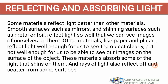When we talk of reflecting and absorbing light, by now you know what we are talking about. Some materials are good reflectors of light, better than other materials. Smooth surfaces such as mirrors and shiny surfaces such as metal or foil reflect light so well that we can see images of ourselves on them. Other materials like paper and plastic reflect light well enough for us to see the object, but not well enough to see our images. These materials absorb some of the light that shines on them, and rays of light also reflect off and scatter from some surfaces.